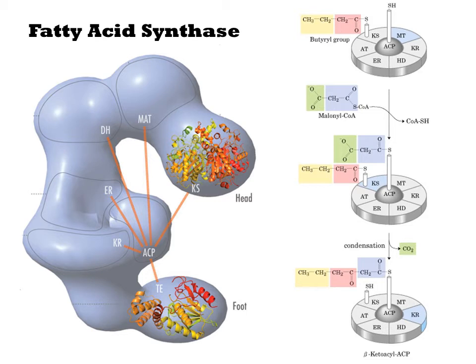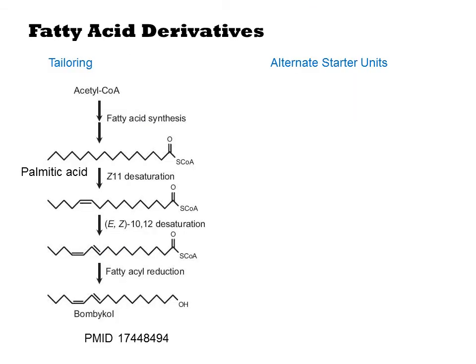Once the cycle is complete, the growing chain remains attached to the ACP and can begin another round of elongation. The class of fatty acid-derived metabolites includes most membrane lipids, prostaglandins, and insect pheromones, to name a few. If the synthase performs every reduction step in its cycle for each malonyl addition, the result is a fully saturated alkyl chain such as palmitic acid. Those intermediates can be released as free acids or CoA derivatives.